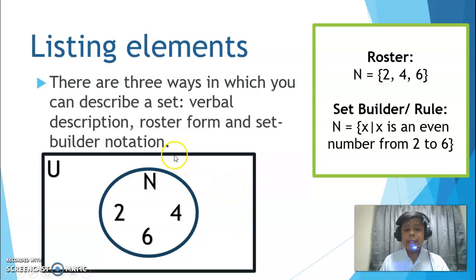Next, let's proceed to listing elements. There are different ways to list elements. It can be verbal description, roster form, and set-builder notation. With roster form, this is probably the easiest to use. Because you just write the name of the set. You can see it here. And then, equals, open brace. This is called a brace. And then, you list the elements. Elements are separated using a comma sign. And then, when you've listed all the elements, you close the brace. That's roster form.